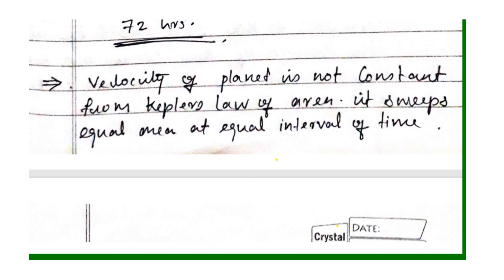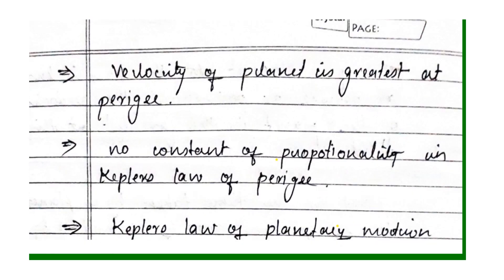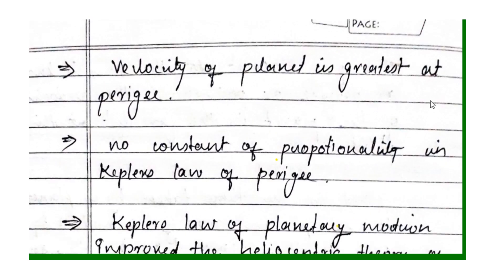The velocity of a planet is not constant. From Kepler's law of areas, the planet sweeps equal areas at equal intervals of time. Therefore we cannot say the velocity is constant. The velocity of a planet is greatest at perigee.